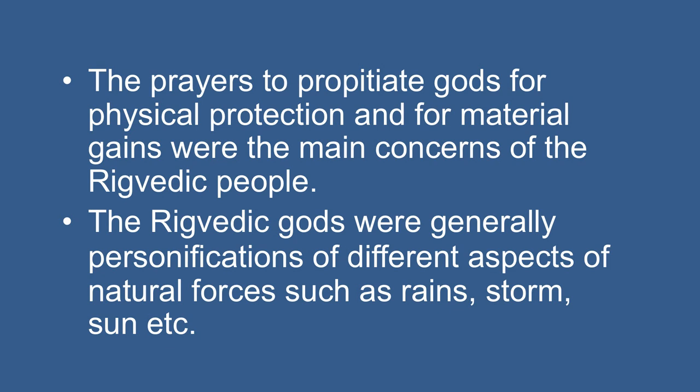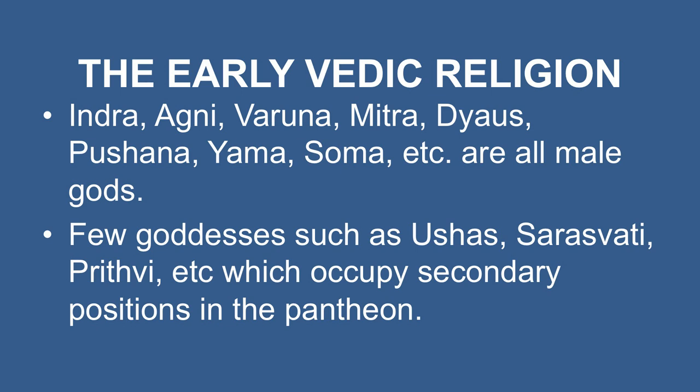The prayers to propitiate gods for physical protection and material gains were the main concerns of the Rig Vedic people. The Rig Vedic gods were generally personifications of different aspects of natural forces such as rain, storm, and sun. The attributes of these gods reflect the tribal and patriarchal nature of society, as we do not find many goddesses mentioned in the text. Indra, Agni, Varuna, Mitra, Dyaus, Pushan, Soma, etc. are all male gods. In comparison, we have only a few goddesses such as Usha, Saraswati, and Prithvi, which occupy a secondary position.